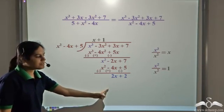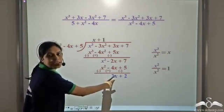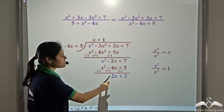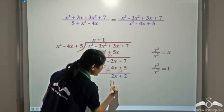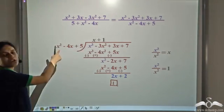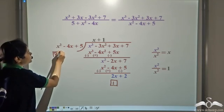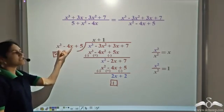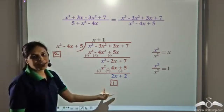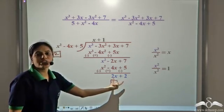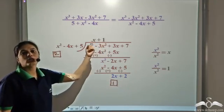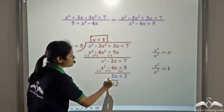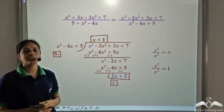Should we divide further? The degree of 2x plus 2 is 1, while the degree of the divisor is 2. Since the degree of the remainder is less than the degree of the divisor, we cannot divide any further. So 2x plus 2 is the remainder and x plus 1 is the quotient of this division.